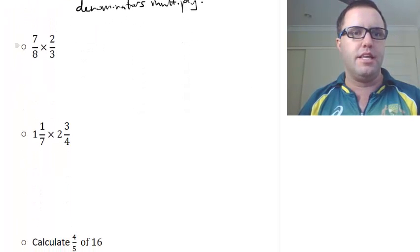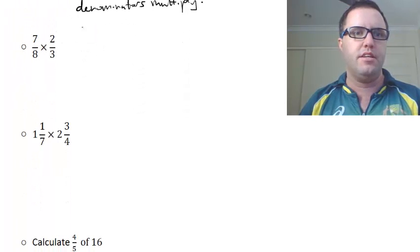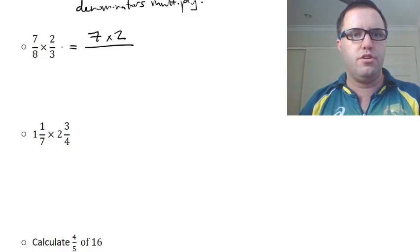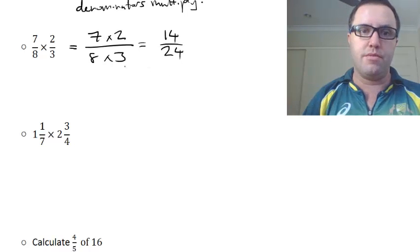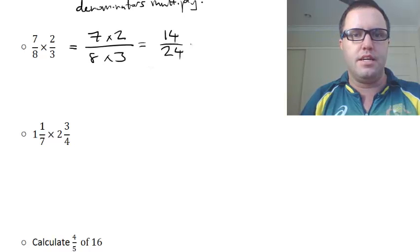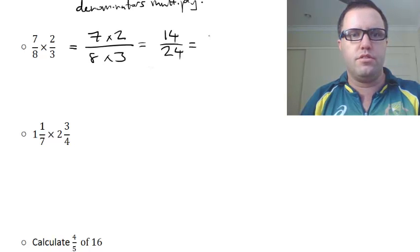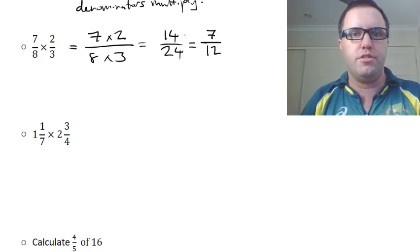I'm going to show you a couple little examples here, so 7 eighths times 2 thirds. We just multiply the numerators together, so 7 and 2, 7 times 2 over 8 times 3, and that gets us 14 over 24, of which the highest common factor is 2, so we're going to get 7 over 12, because we divide by 2, divide by 2.